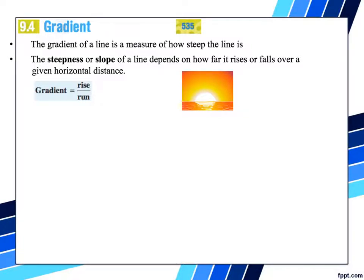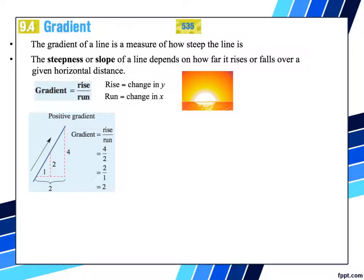Now this gradient that we're talking about is the rise over the run. How do I remember it? Pretty simple. I always look at the sunrise, rise over the run. So the sunrise over the run. The rise is how much the value changes in the y-axis divided by how much it changes in the x-axis.